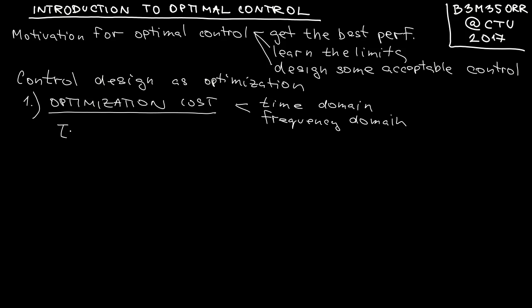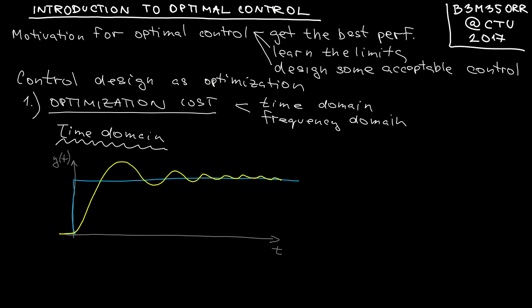Typically we formulate our cost functions as a function of a response to some typical input such as the step input. If Y is the output and the input is a step signal, the prototypical response could look like this. We can identify the overshoot which is a candidate for minimization, or we may want to minimize the rise time or the settling time.